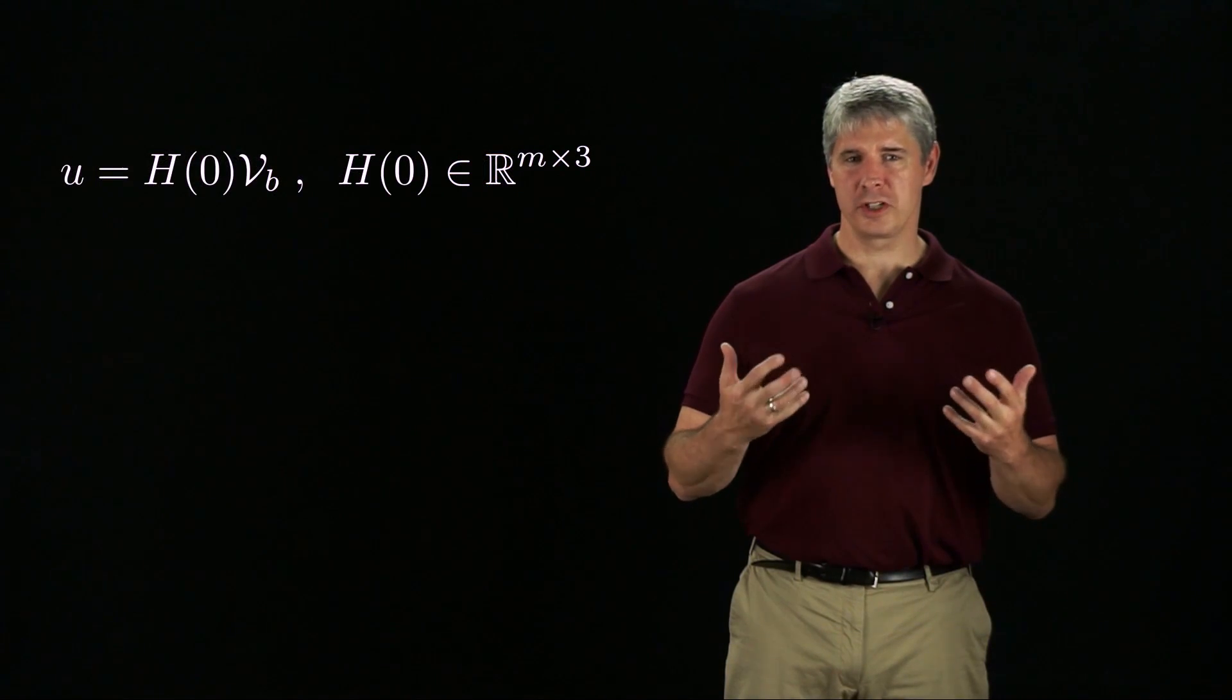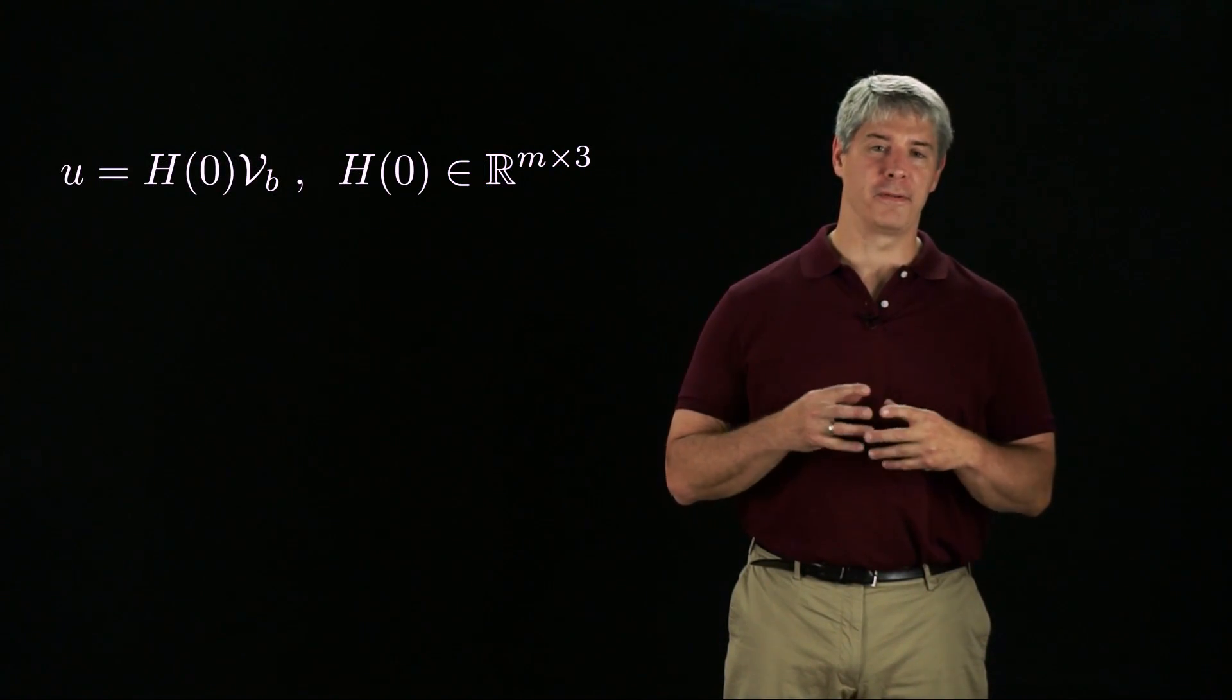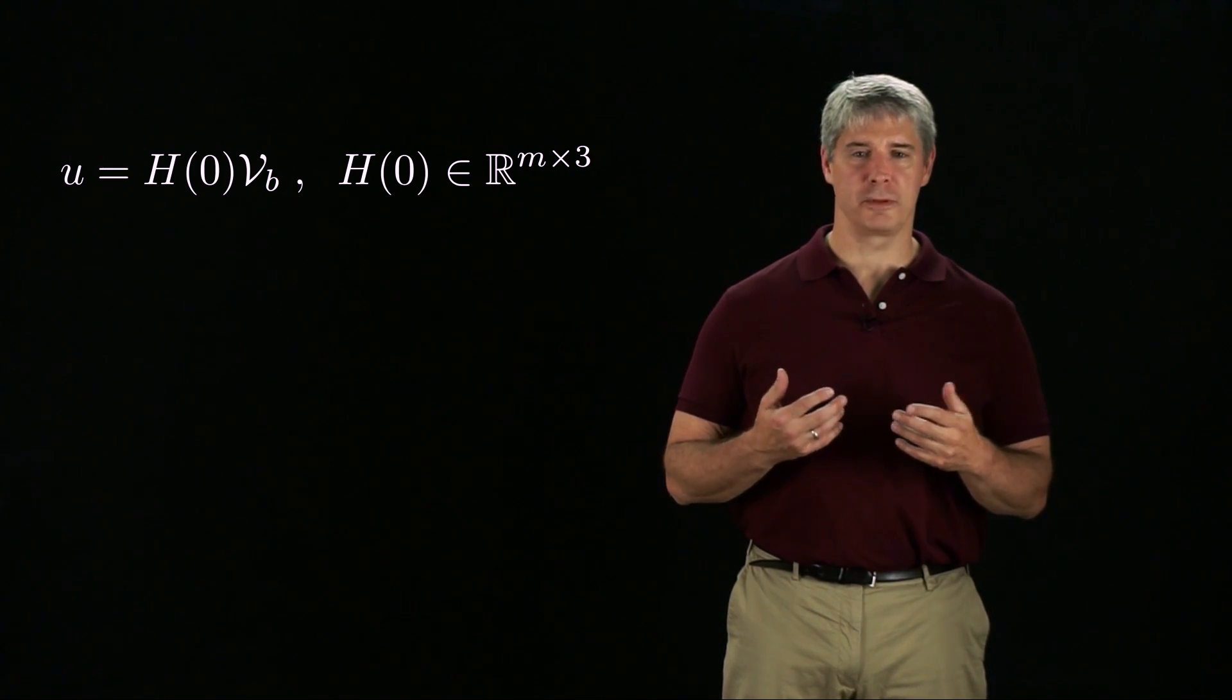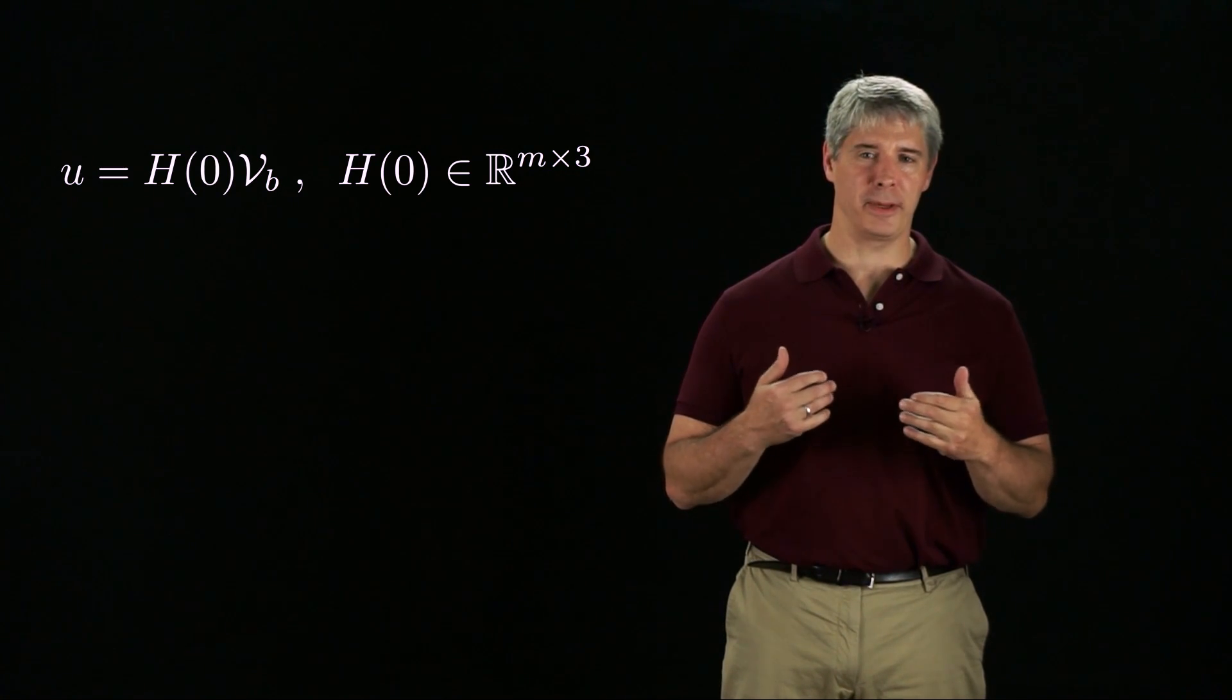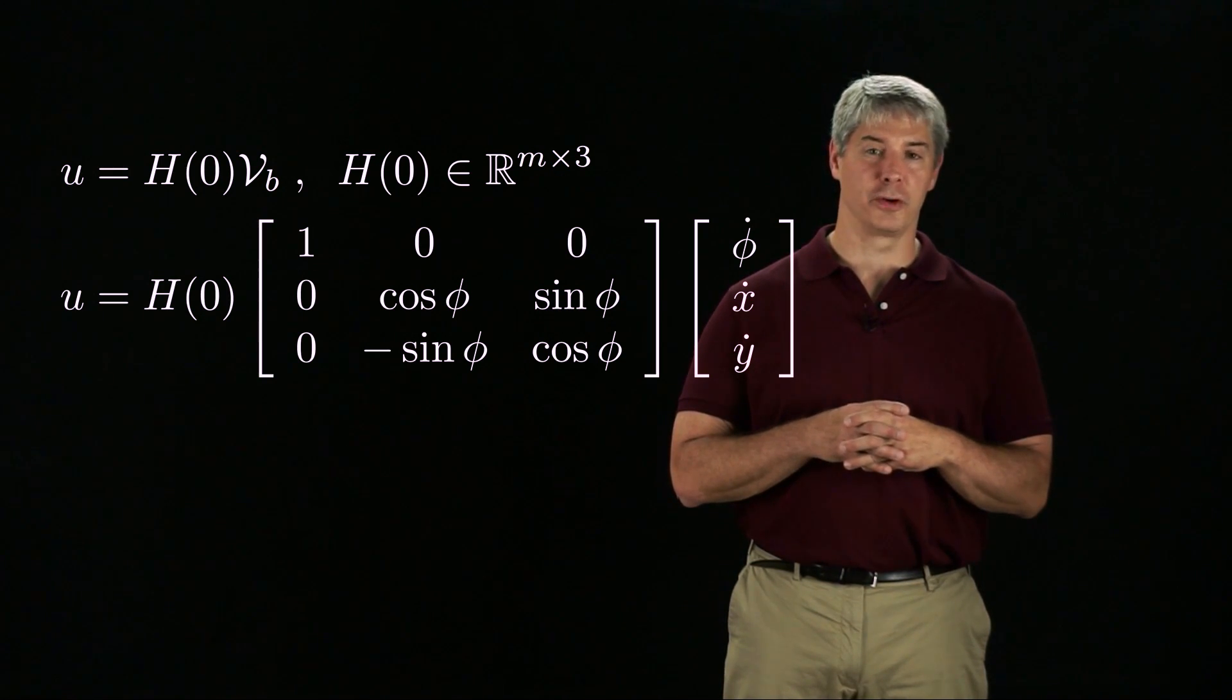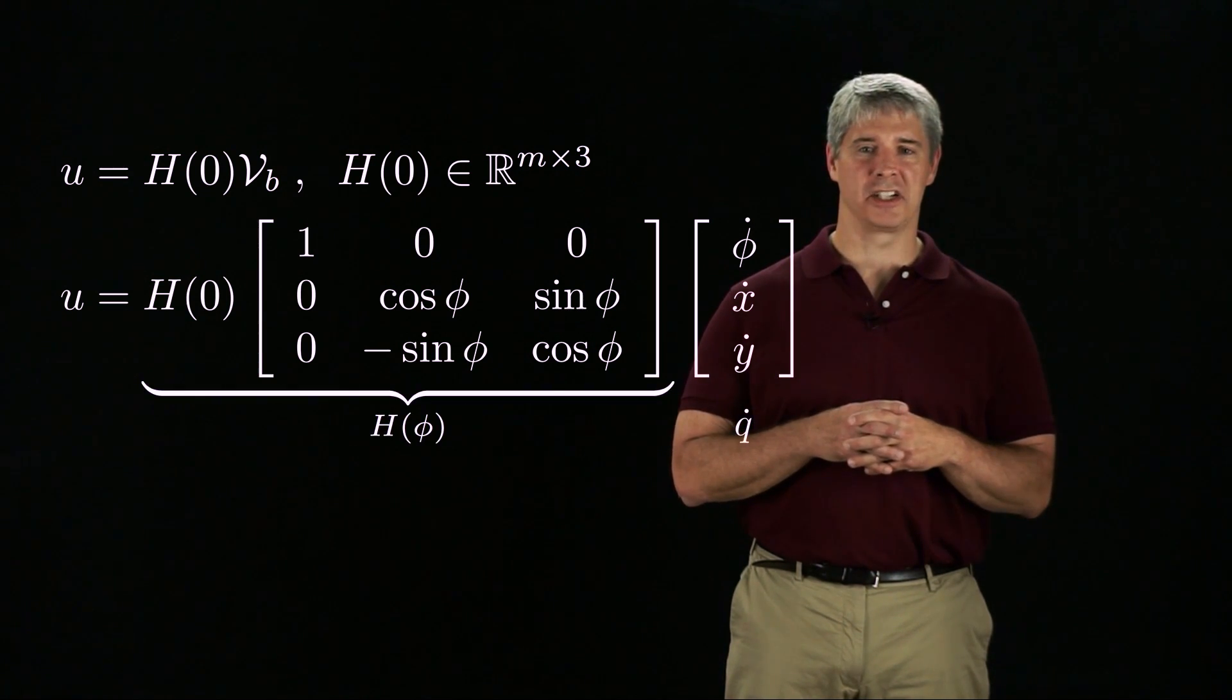In summary, the wheel speeds equal the H matrix times the twist, provided H is full rank. Sometimes it's convenient to calculate the wheel speeds in terms of q dot, the rate of change of the coordinates phi x and y. To do this, we replace vB by a rotation matrix times q dot, where the rotation matrix transforms q dot to vB. We call H times the rotation matrix the matrix H0, giving us the relationship u equals H0 times q dot.